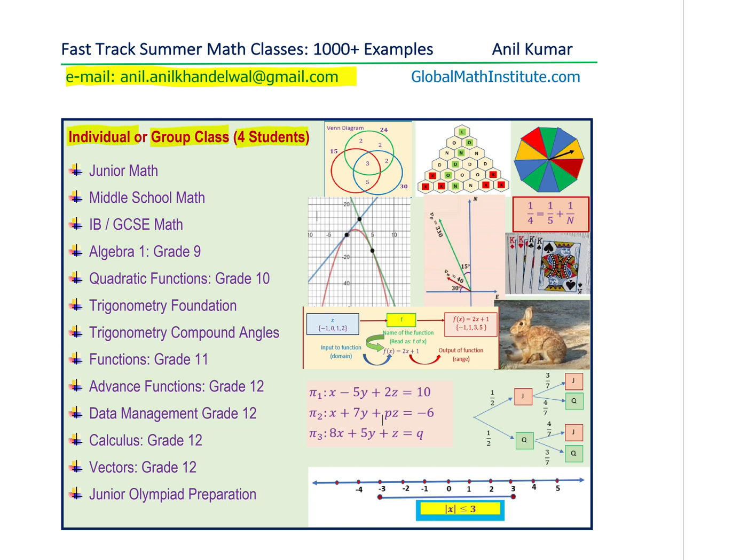Junior math, that is up to grade 5, and then middle school 6, 7 and 8. We have special plans for IB students and GCSE math students. One of the most popular programs is going to be Algebra 1. I am writing here grade 9 but even middle school students can join this plan.